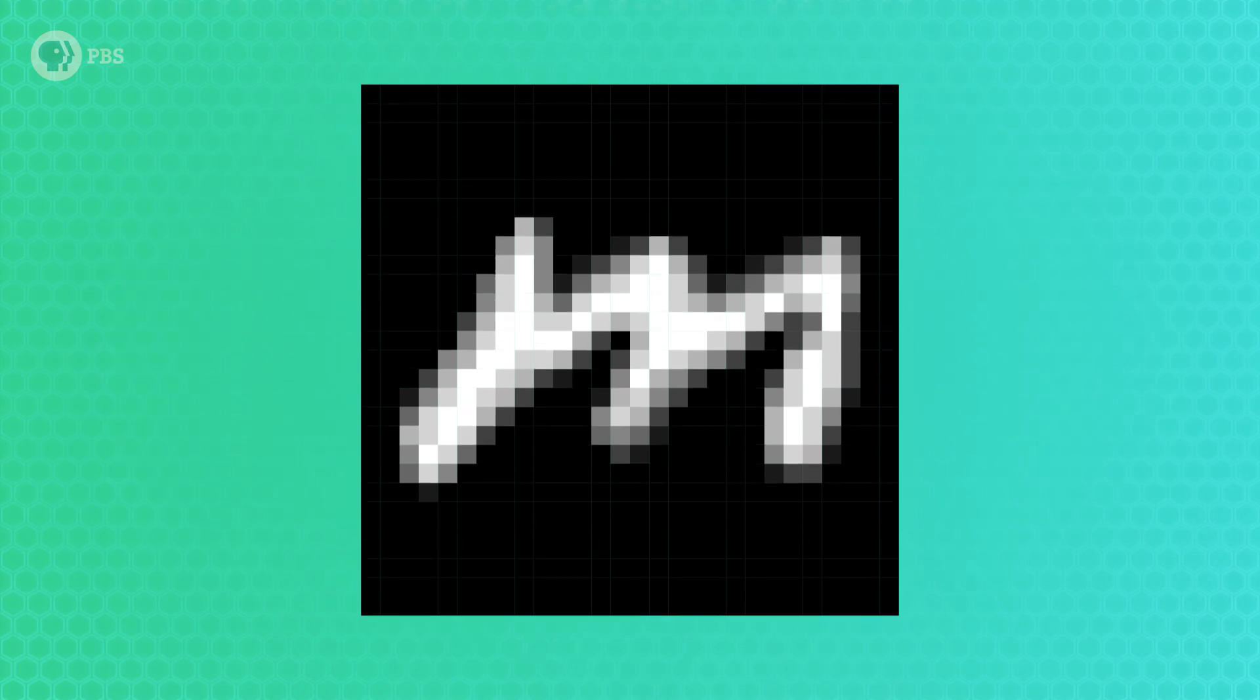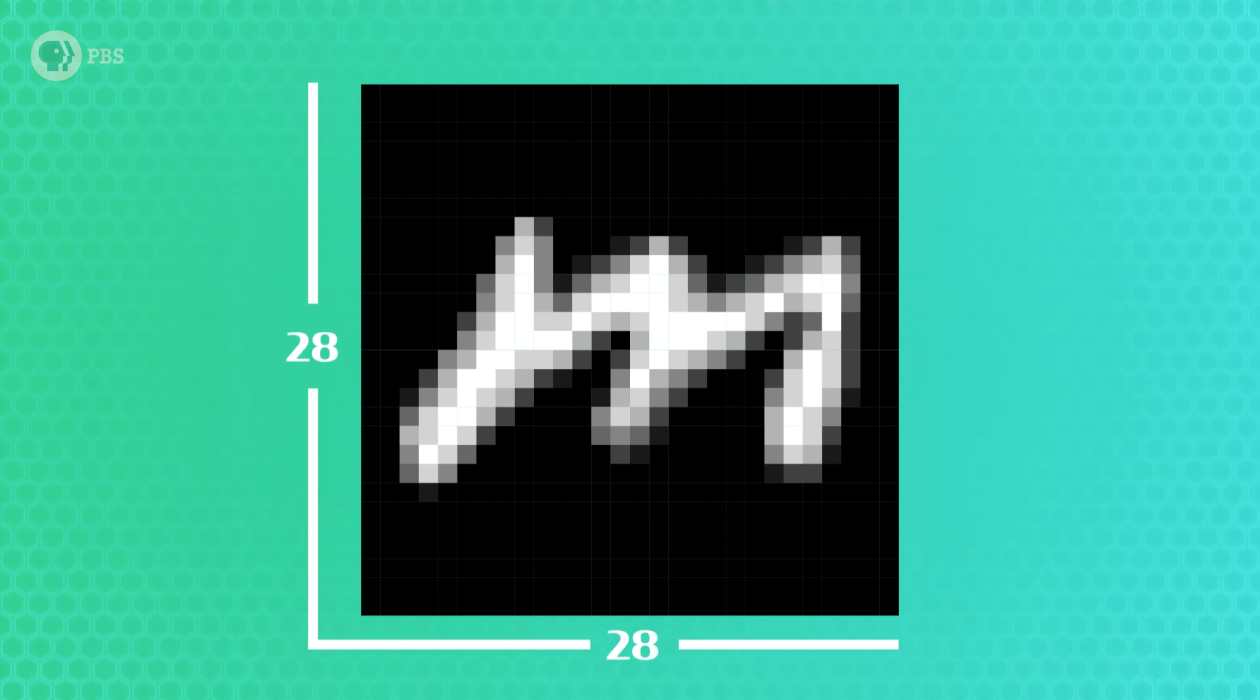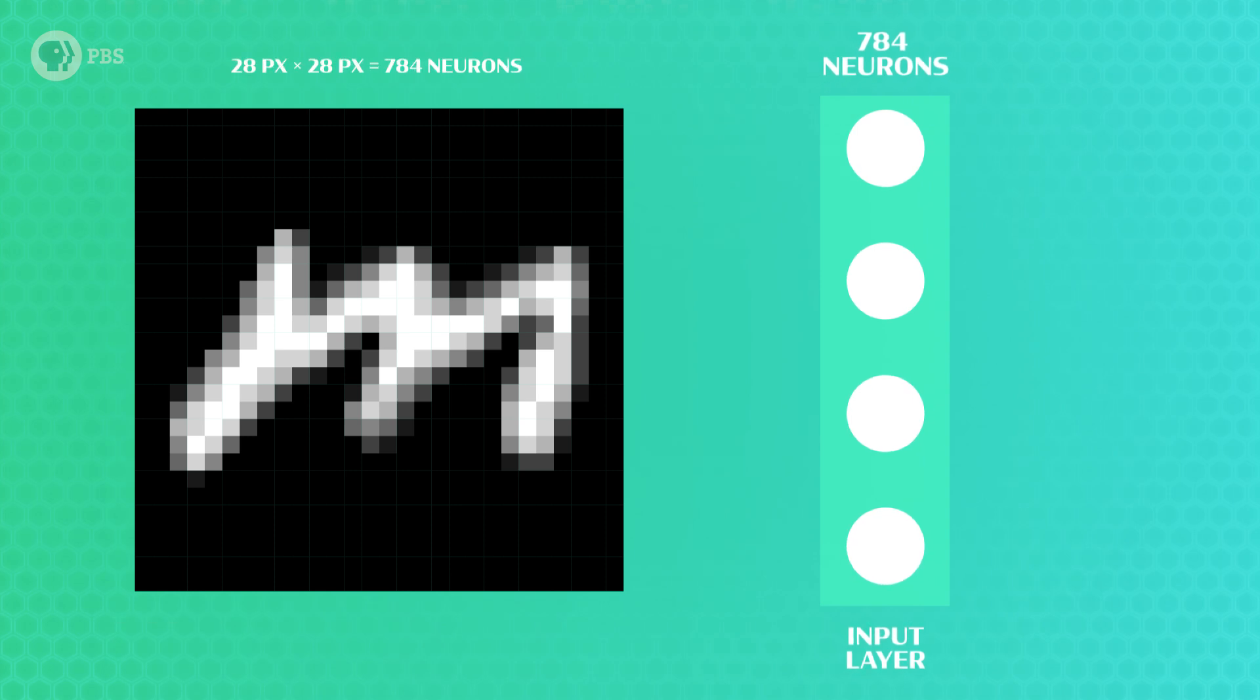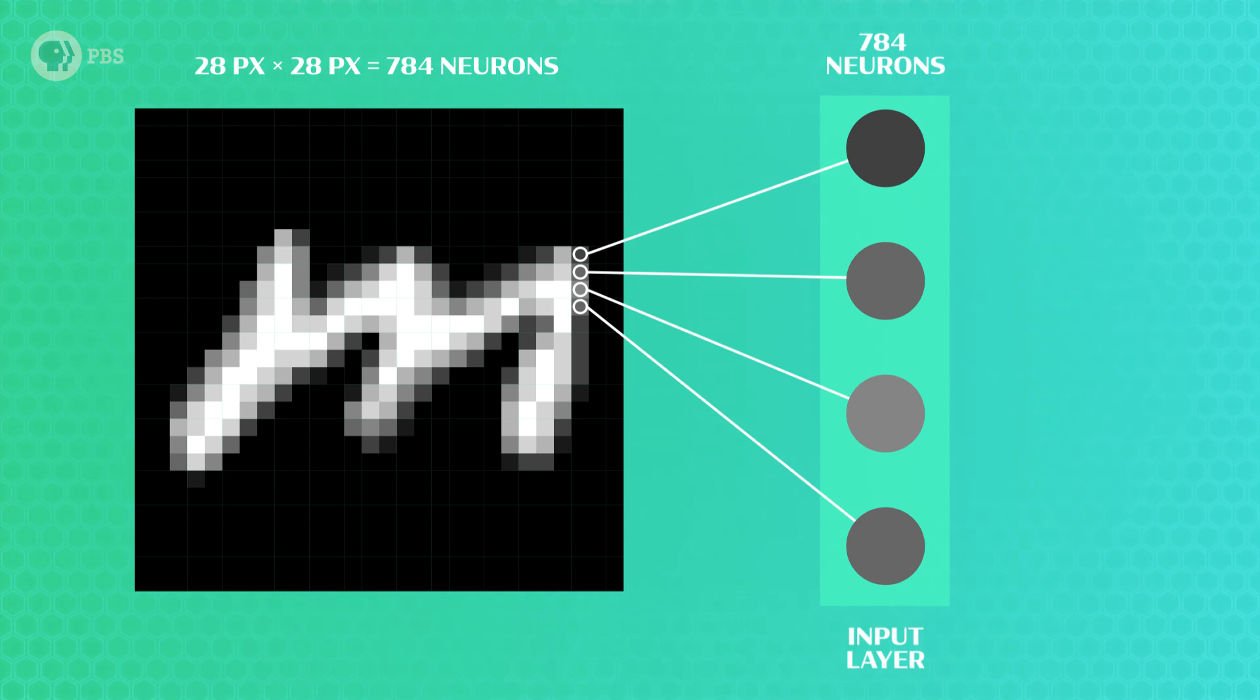So, our neural network is going to have images of handwritten letters as inputs. Each image from the EMNIST is 28 by 28 pixels, and each of these pixels will be represented by a single input neuron. So, we'll have 784 input neurons in total. Depending on how dark a particular pixel is, it will have a grayscale value between 0 and 1, thanks to the processing we did earlier.